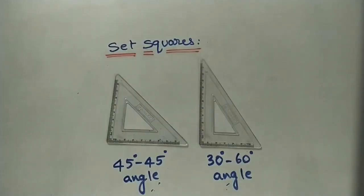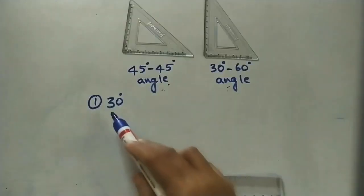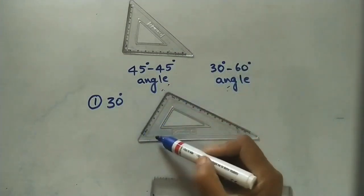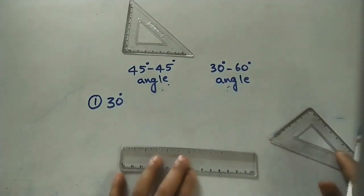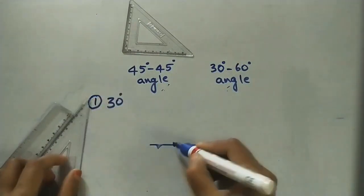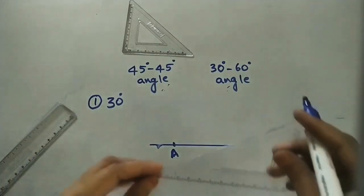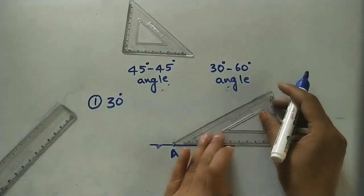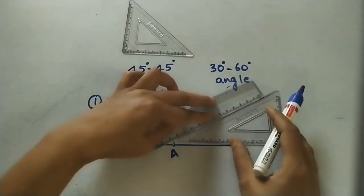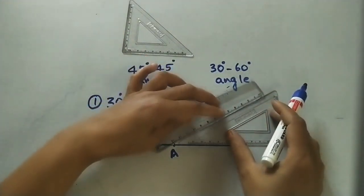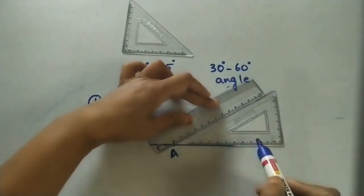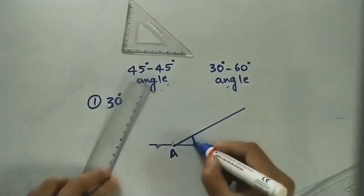Let's take some examples of how to mark angles using a single set square and combinations of two. To mark 30 degrees, I am taking the 30-60-90 set square. At this point, I keep the 30-degree angle on the inclined surface, shift the scale to this point, and tilt accordingly. Remove the set square and this angle shows 30 degrees.